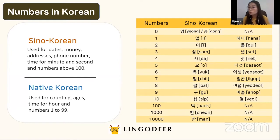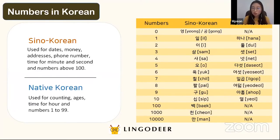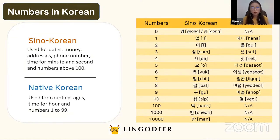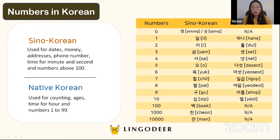Now let's see Native Korean numbers from 1 to 10: 하나, 둘, 셋, 넷, 다섯, 여섯, 일곱, 여덟, 아홉, 열. Those are the Native Korean numbers. So Sino-Korean numbers and Native Korean numbers are different and have different uses, so you have to learn both systems.